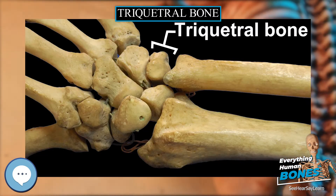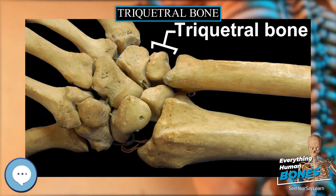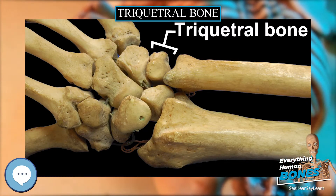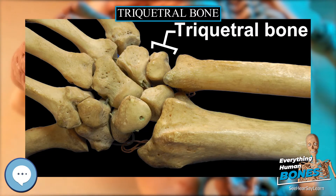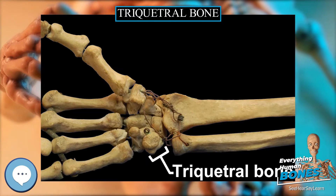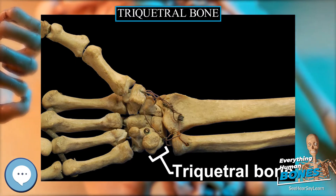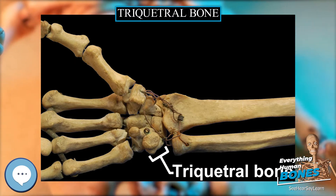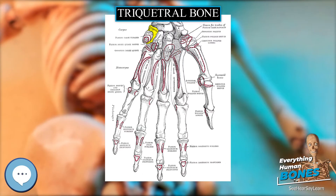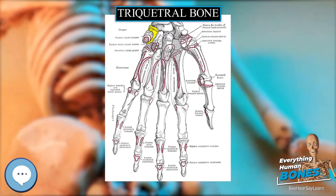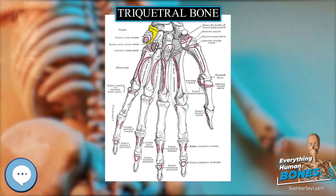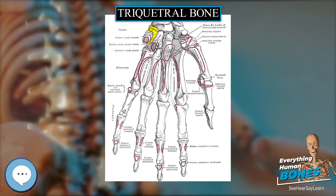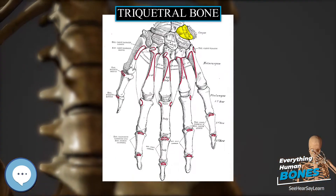Structure: The triquetral is one of the eight carpal bones of the hand. It is a three-faced bone found within the proximal row of carpal bones. Situated beneath the pisiform, it is one of the carpal bones that form the carpal arch, within which lies the carpal tunnel.